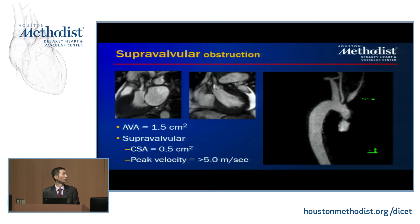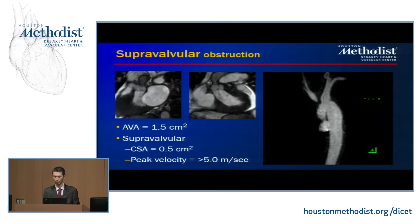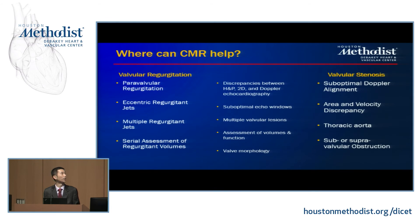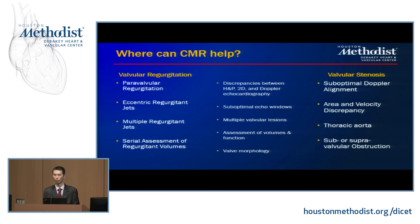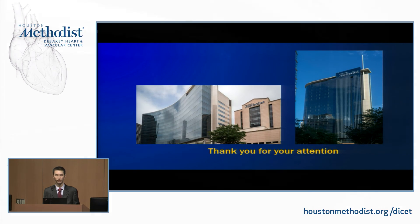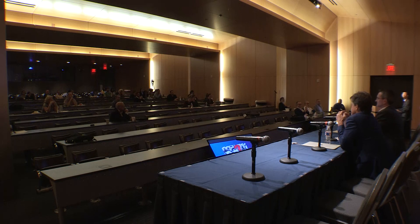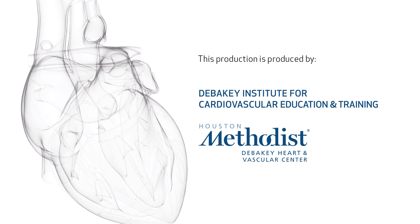In summary, CMR can help in most valve lesions by resolving discrepancies between clinical data, overcoming suboptimal echo windows, assessing multiple valvular lesions, and evaluating volumes, function, and valve morphology. For regurgitation, it adds value in paravalvular leakage, eccentric or multiple regurgitant jets, and serial regurgitant volume assessment. For stenosis, it provides peak velocities, planimetric valve area, thoracic aortic evaluation, and sub- and supravalvular obstruction assessment. Thank you for your attention.